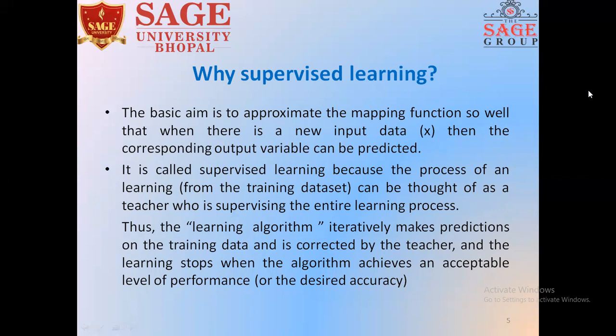When we are working on machine learning models, we evaluate our model using accuracy — what accuracy we have achieved. Accuracy gives you the measure of whether your model's prediction is better or not.